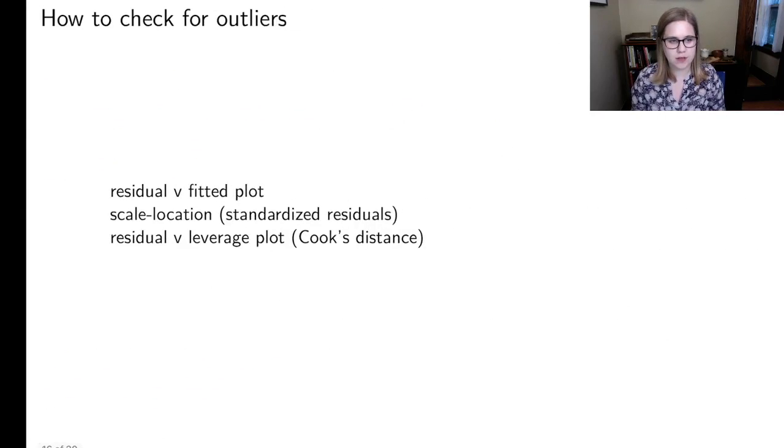So there are some ways to check for outliers. One is just with your standard residual versus fitted plot. But there's two other specialized plots. There's the scale location plot, which has standardized residuals, and the residual versus leverage plot, which is the Cook's distance plot.